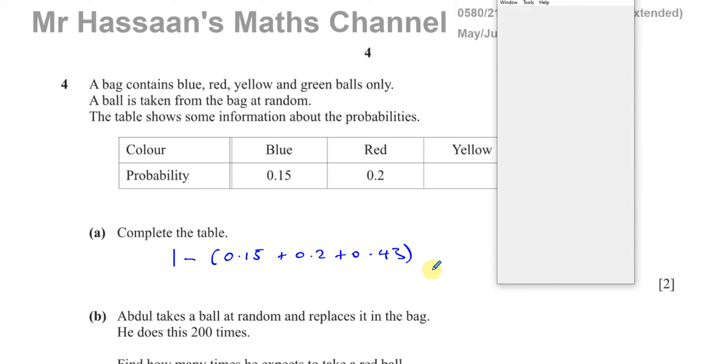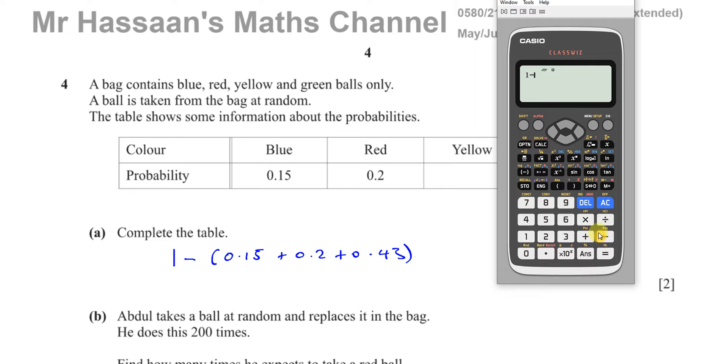You can just put this in your calculator if you wish. One minus the sum of all the other numbers: 0.15 plus 0.2 plus 0.43. Have a quick check on your calculator that you didn't type anything incorrectly, which is quite a common thing to do. That will give you your answer,